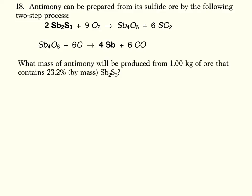Let's look at number 18. Antimony can be prepared from its sulfide ore by the following two-step process. Starting with this antimony sulfide, reacting with some oxygen will make Sb4O6 and sulfur dioxide. That Sb4O6 will then react with carbon to make the Sb, the antimony. Antimony, by the way, is Sb.